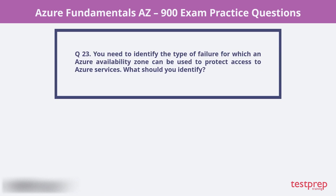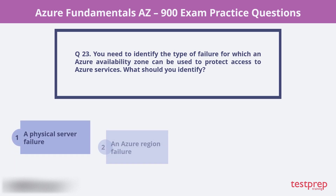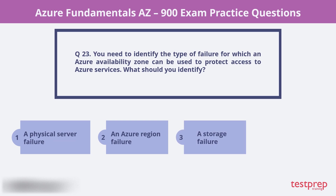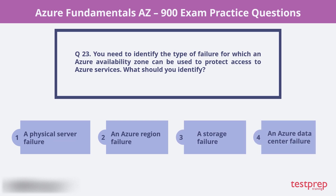Question 23. You need to identify the type of failure for which an Azure Availability Zone can be used to protect access to Azure services. What should you identify? The correct answer is an Azure data center failure.